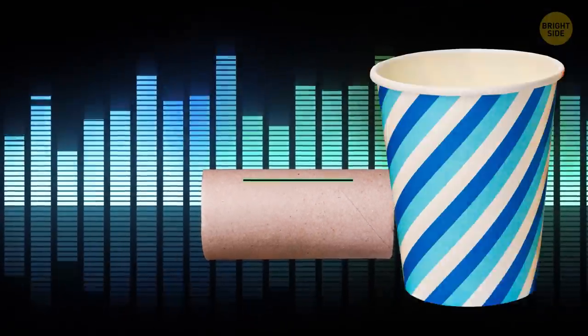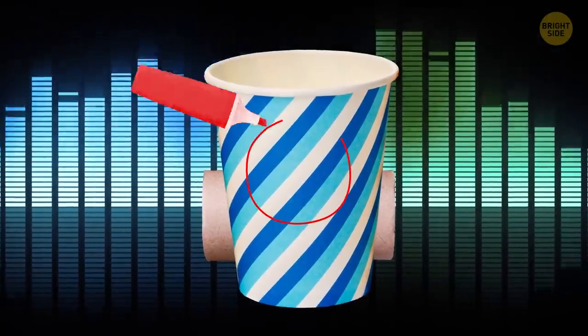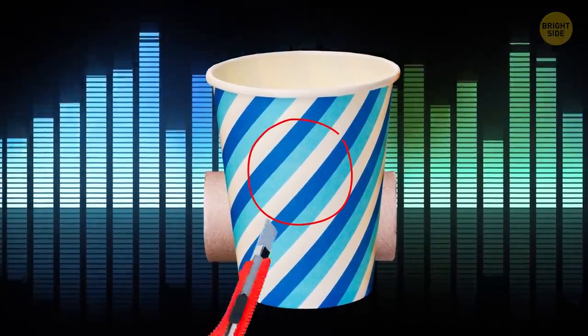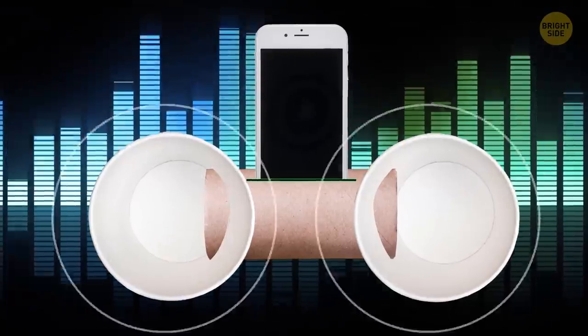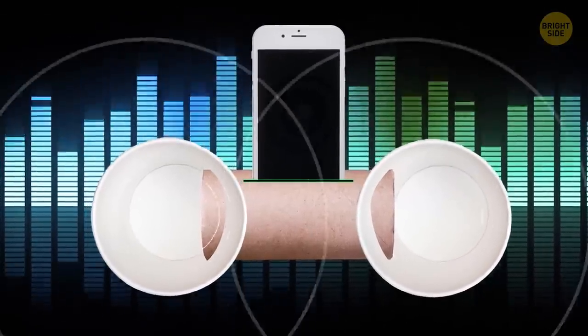Make a slot where you'll later put your phone. Mark each end of the roll on horizontally placed cups and carve two holes. Decorate the cups and roll with some tape or paint and slot the roll into the cups.